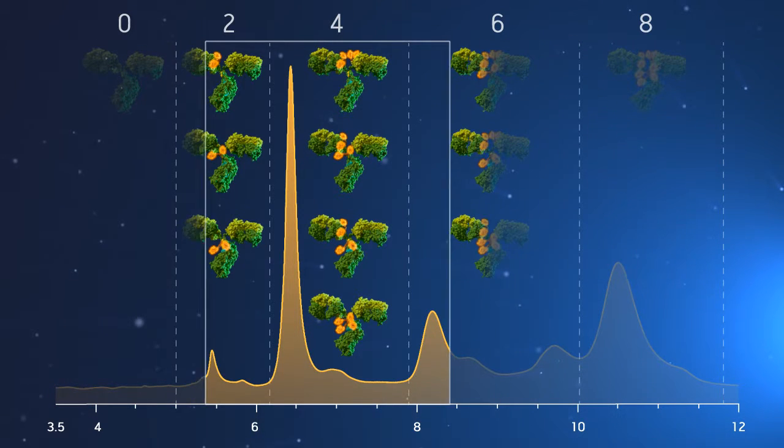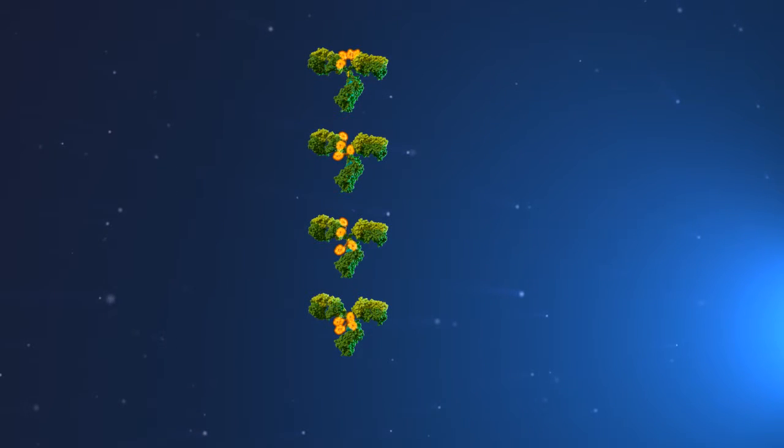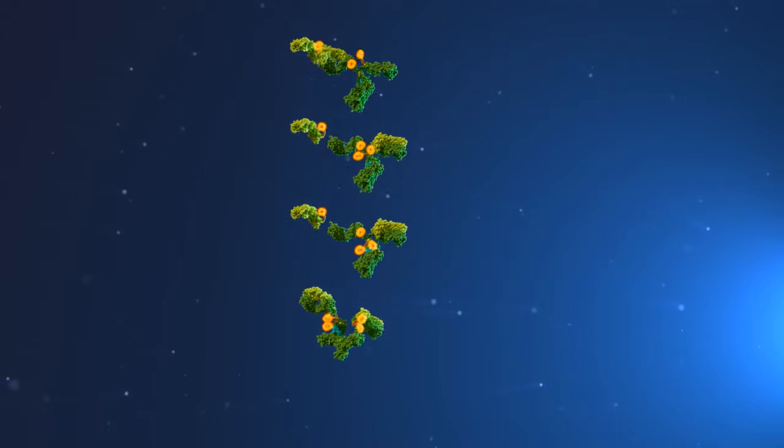In this example, one peak is isolated from the HIC separation. Because the conjugated drugs replace disulfide bonds, conjugated chains may separate under reversed-phase conditions.